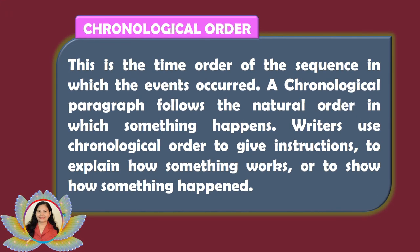Chronological order is the time order — the sequence in which events occurred. A chronological paragraph follows the natural order in which something happens. Writers use chronological order to give instructions, to explain how something works, or to show how something happened.